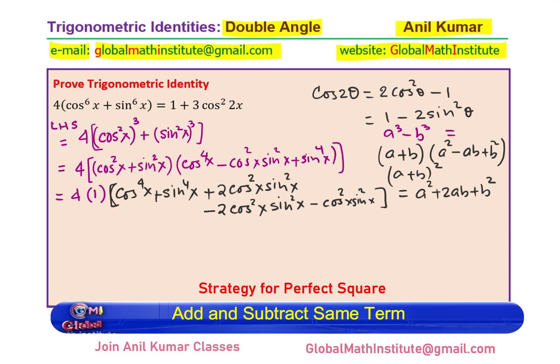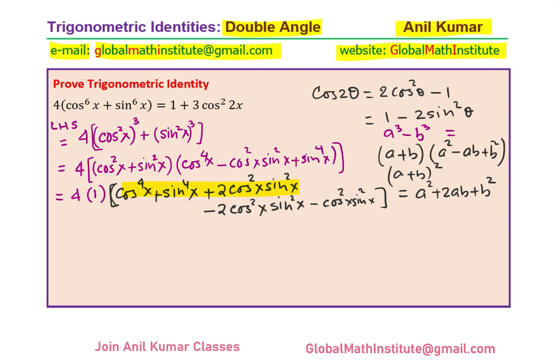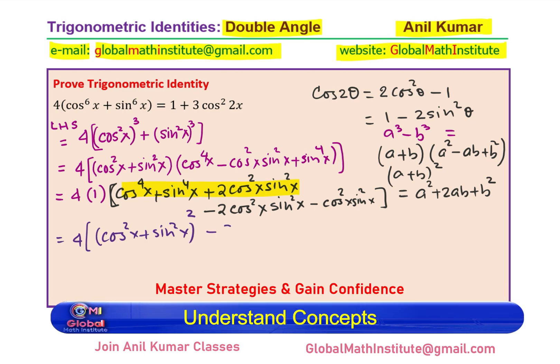Now you can see these three terms can be clubbed together and written as cos square x plus sin square x whole square. So let me rewrite this as 4 times cos square x plus sin square x whole square, that takes care of these three terms, and then combining the other two, we have minus 3 cos square x sin square x.